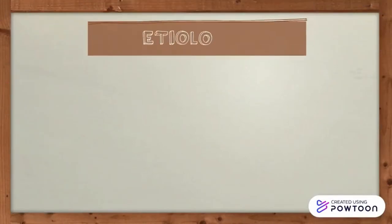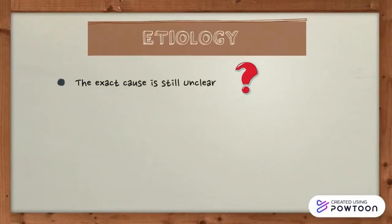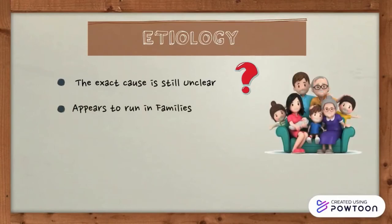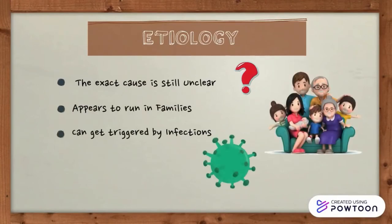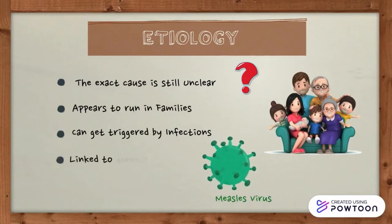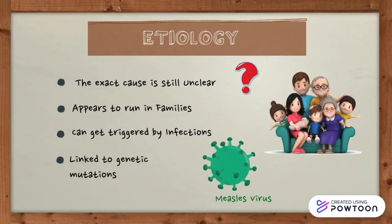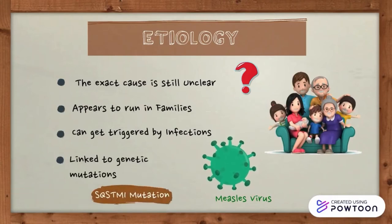The exact cause of Paget's disease is still unclear. It appears to run in families and can be triggered by infection, such as measles virus during childhood. It is also linked to genetic mutations such as the SQSTM1 mutation.